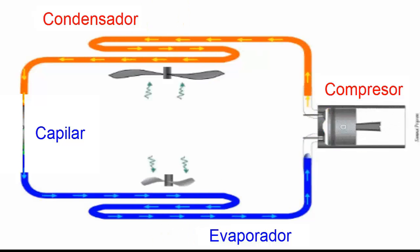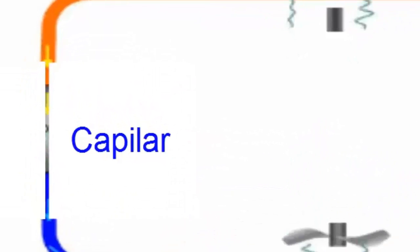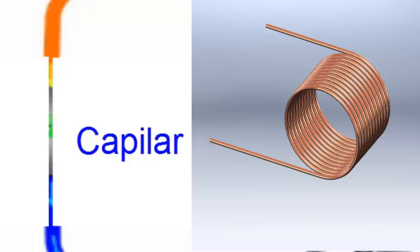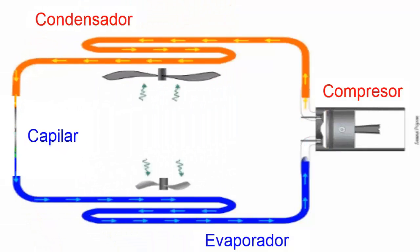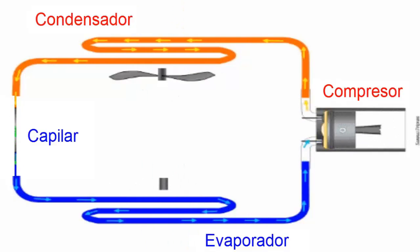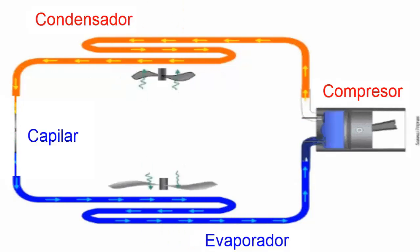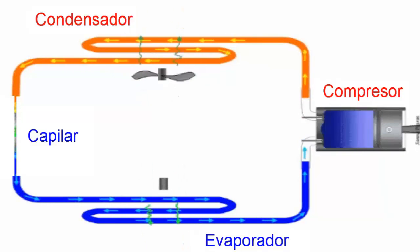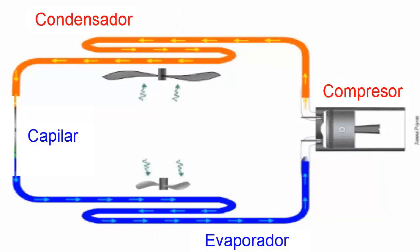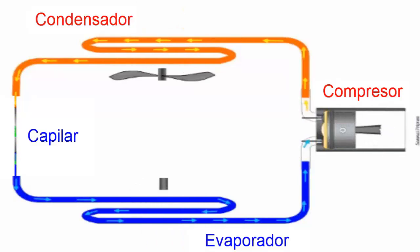In this video, you'll learn everything about the capillary tube obstruction that can occur in refrigeration or air conditioning systems in just 3 minutes. On the screen, we have a refrigeration circuit that we'll use to explain what happens in a cycle when the capillary tube is obstructed. Let's analyze it step by step.